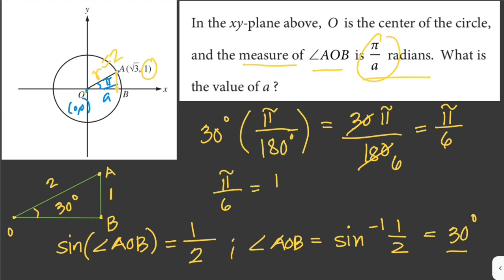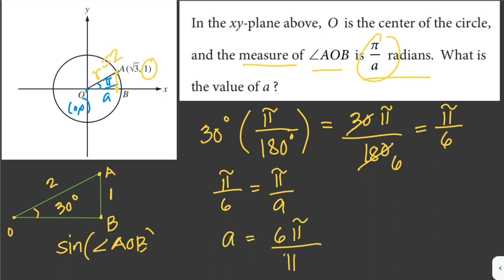Then we can equate π over 6 to π over a to solve for a. Then a here is just equal to 6π over π, and π here cancels out. So the value of a is just equal to 6.